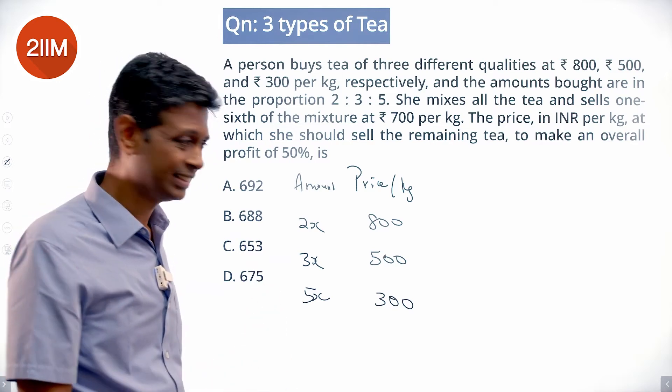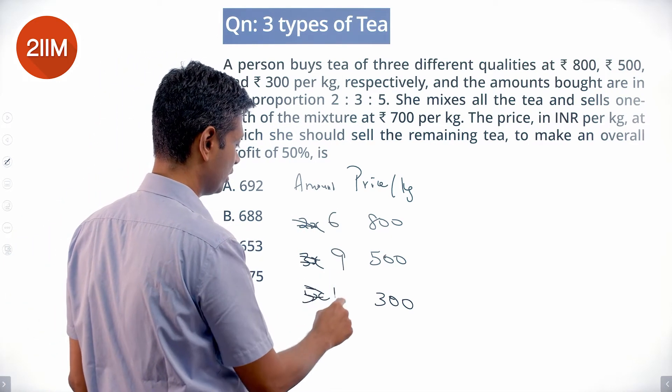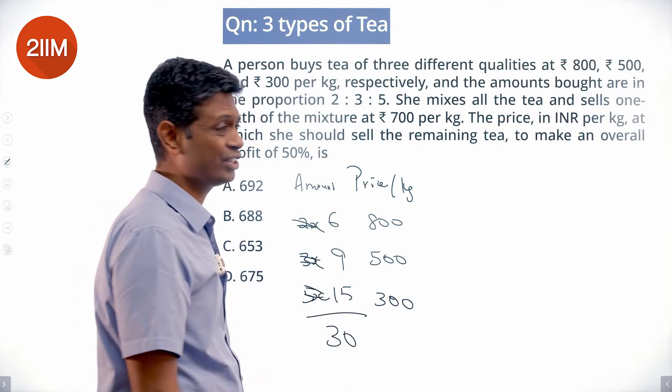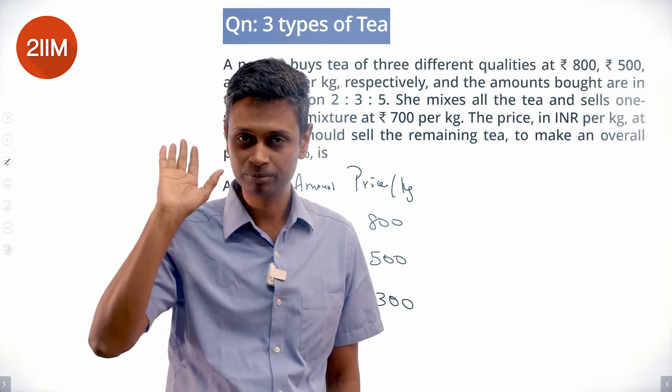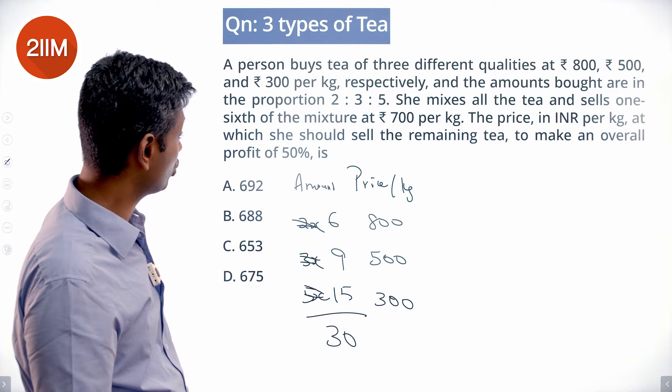Call this as 6 kilograms, 9 kilograms, 15 kilograms. These three will add up to 30 kilograms. Let's say she sells 5 kilograms and will have 25 remaining. The price in INR per kilogram at which she should sell the remaining tea to make an overall profit of 50 percent...